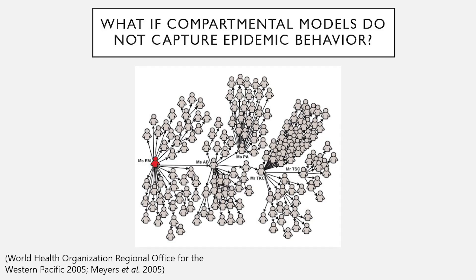A lot of my own research has focused on asking: what if these compartmental models, which assume that everyone has an equal likelihood of infection, don't actually capture epidemic behavior? This is a contact tracing figure from the SARS outbreak in the early 2000s — a depiction of who came into contact with whom. For that particular disease, it turned out there were super spreaders, like Mrs. M, who caused a disproportionately high number of secondary cases, typically due to individual differences in behavior and physiology.